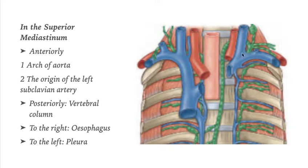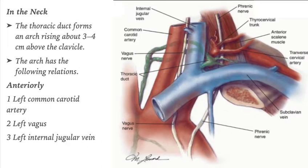To the left side we have the descending thoracic aorta. In the superior mediastinum, anteriorly we have the arch of the aorta and the origin of the left subclavian artery; posteriorly the vertebral column; to the right the esophagus; and to the left we have the pleura.